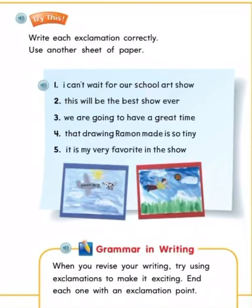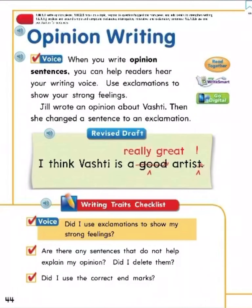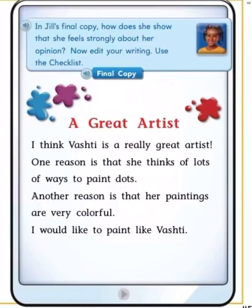Grammar in writing: when you revise your writing, try using exclamations to make it exciting. End each one with an exclamation point. Opinion writing — voice: when you write opinion sentences, you can help readers hear your writing voice. Use exclamations to show your strong feelings. Jill wrote an opinion about Vashet, then changed a sentence to an exclamation. Revised draft: 'I think Vashet is a really great artist!' Writing traits checklist: Did I use exclamations to show my strong feelings? Are there any sentences that do not help explain my opinion? Did I delete them? Did I use the correct end marks? In Jill's final copy, how does she show that she feels strongly about her opinion? Now edit your writing using the checklist.